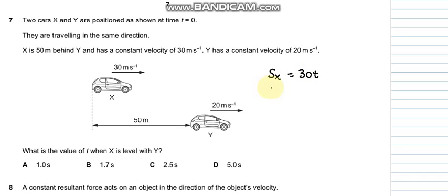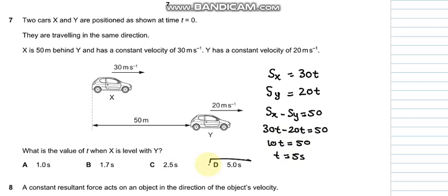The displacement of X is 30 into T, and displacement of Y is 20T. We already know that the distance between them is 50 meters, so SX minus SY equals 50. 30T minus 20T equals 50, 10T equals 50, and T equals 5 seconds. So D is the appropriate answer.